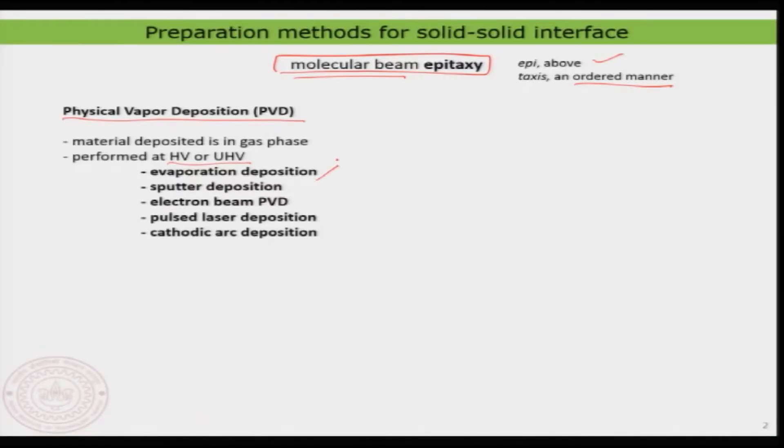What do you do in physical vapor deposition? As the name suggests, it is a simple vapor deposition — a very simple methodology in terms of the method itself. What you need is a clean crystalline surface, and once you clean the surface you can start evaporating materials of one type onto another. Generally you use something called evaporation deposition — you heat the material and deposit it — or you use another method called sputter deposition.